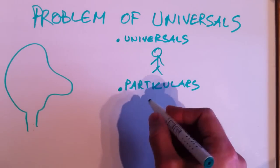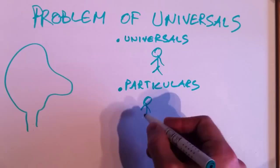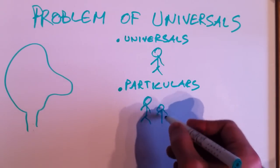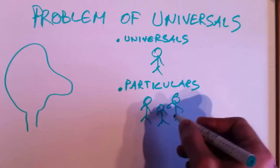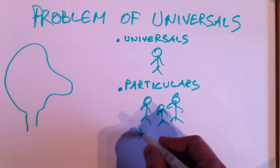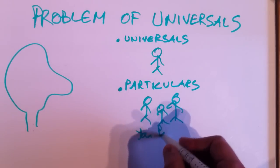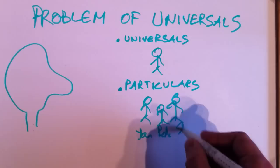As distinct from specific individuals such as, let's say, this here is Jan, this here is Pete, this here is Steve.